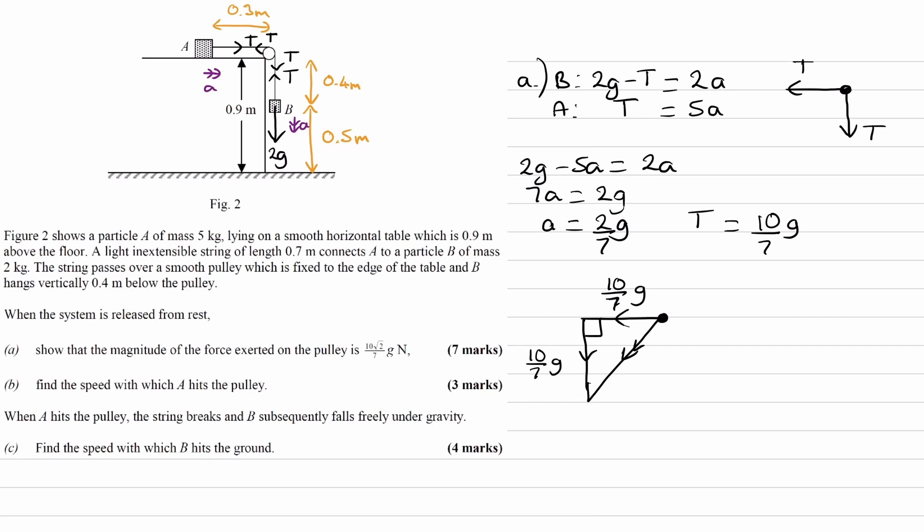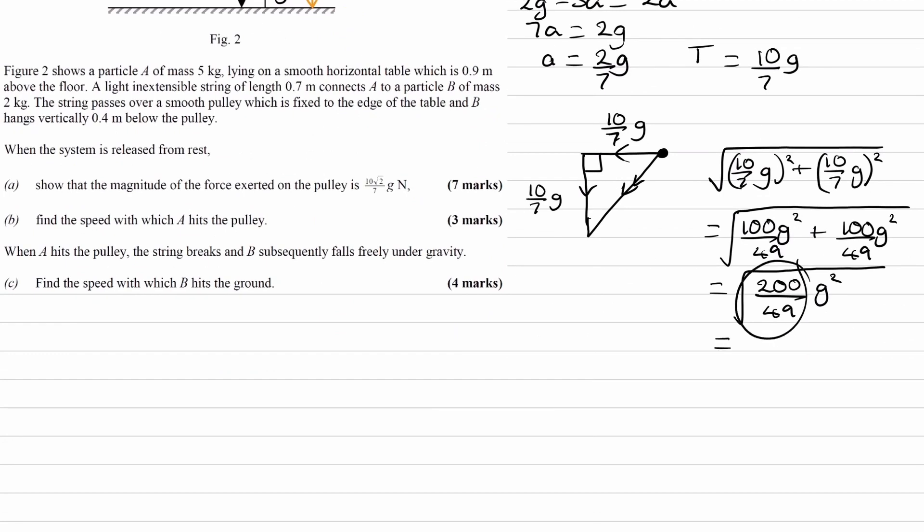Since this is a right angle, the resultant force is √[(10g/7)² + (10g/7)²] = √[100g²/49 + 100g²/49]. Remember g² is just an algebraic term. This becomes √[200g²/49]. Taking the square root: √200/√49 gives 10√2/7, and √g² gives g. So our answer is 10√2g/7.